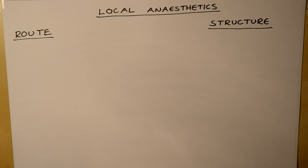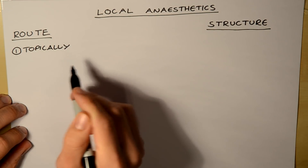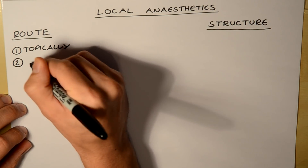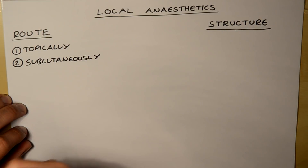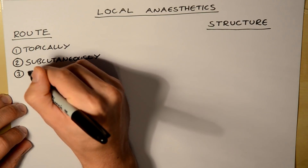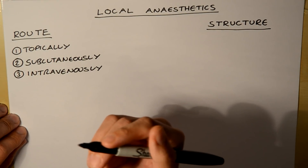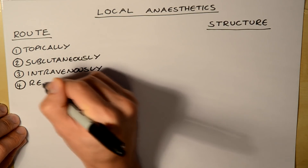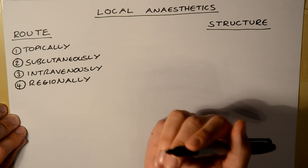Where can they go? If we look at their route, there are four main ways of giving local anaesthetics. First off, we have topically — local anaesthesia of the skin via a gel or cream, which is useful in cannulation of children, for example. The second route is subcutaneously, which can be to block superficial nerves. The third route is intravenously, useful in regional anaesthesia using a tourniquet such as in a Bier's block. And the fourth route is regionally, useful for example in a spinal or an epidural block in order to block the spinal nerves.